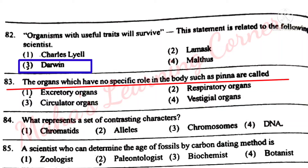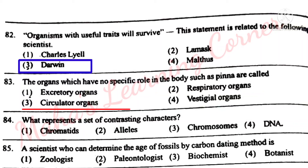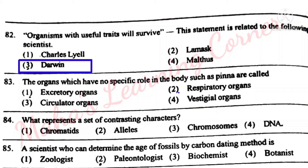The organs which have no specific role in the body, such as pinna, are called vestigial organs. Correct answer: Option 4 – Vestigial organs. There are nearly 180 vestigial organs in human beings, for example pinna, hair and skin, mammary glands in males. That is why human beings are said to be a moving museum of vestigial organs.